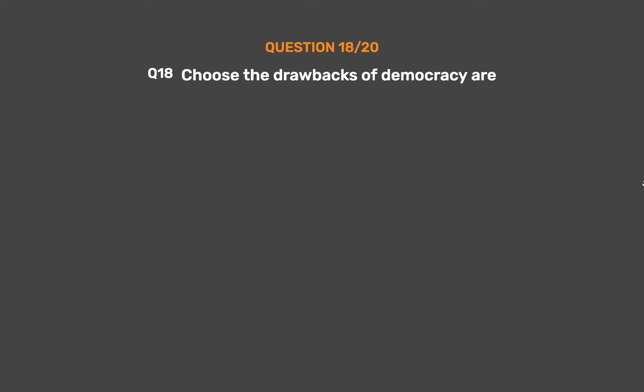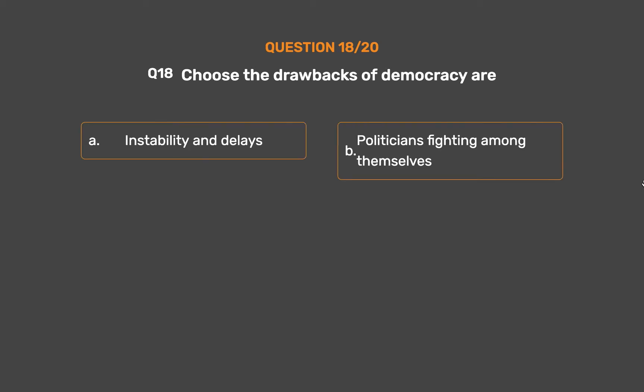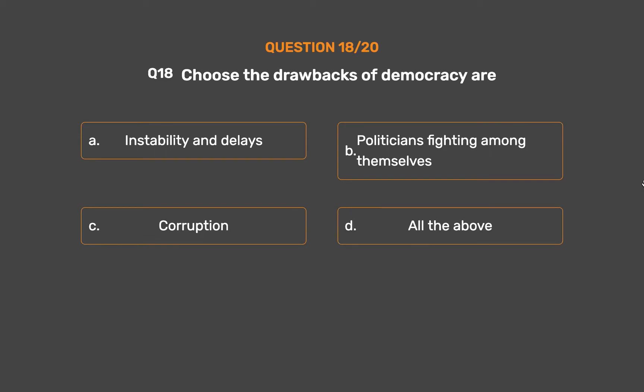Question number 18. Choose the drawbacks of democracy. Option A: Instability and delays. Option B: Politicians fighting among themselves. Option C: Corruption. Option D: All the above.